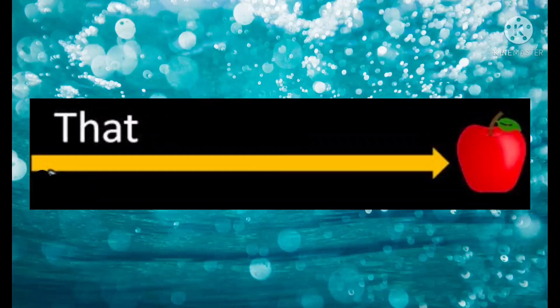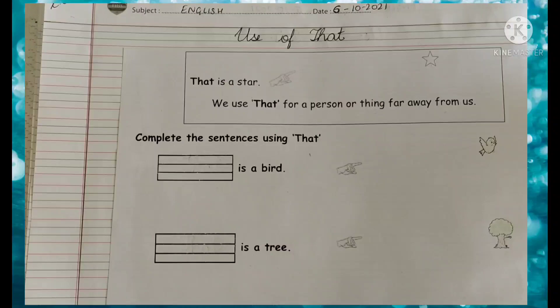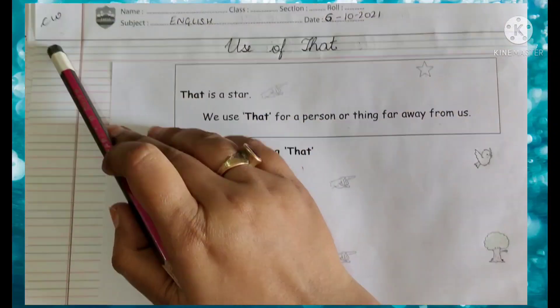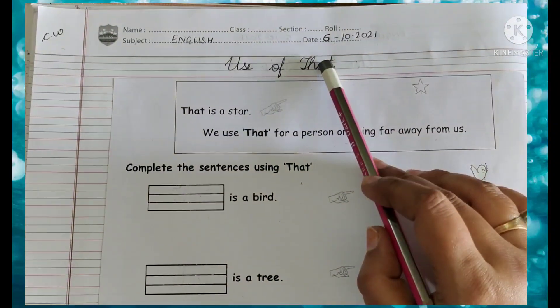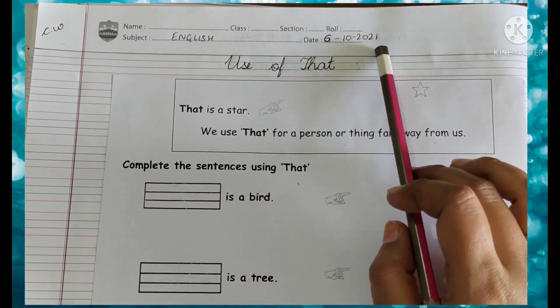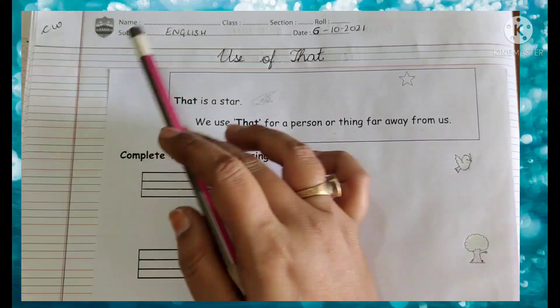Now kids, all of you get ready with your English copy. We will do some practice work here. Ready with your English copy? So you have to write first your CW and today's date. Today's date is 6 October 2021. And you have to draw the margin.